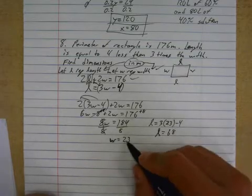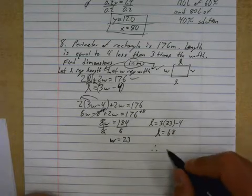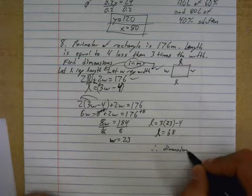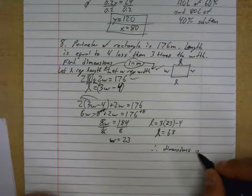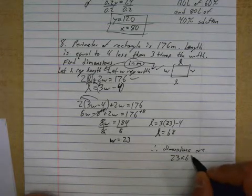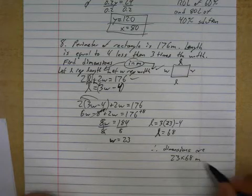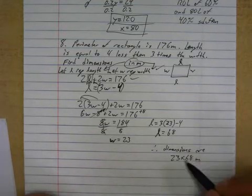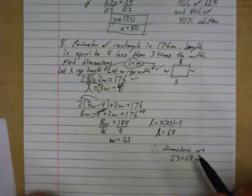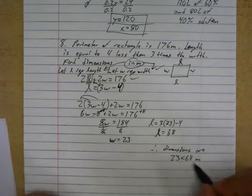We are solved for the width, solved for the length. Therefore, dimensions are 23 by 68 meters. Or you could also say the dimensions are 68 is the length and 23 is the width. But nah, it's good enough.